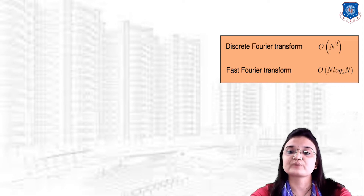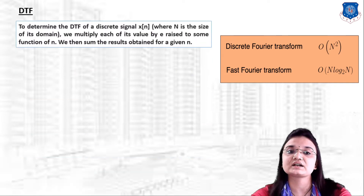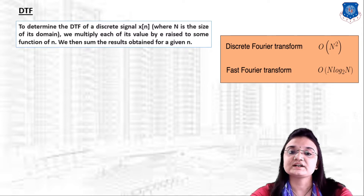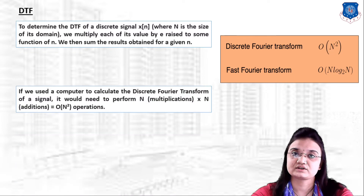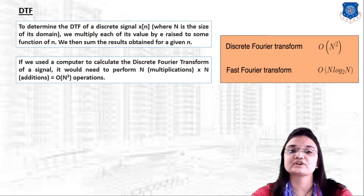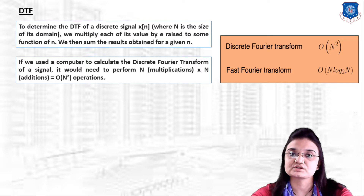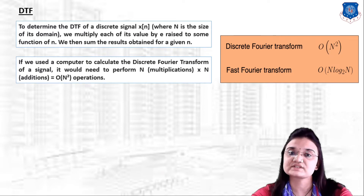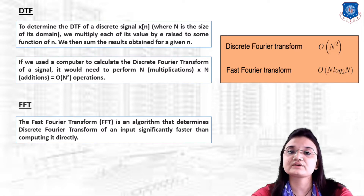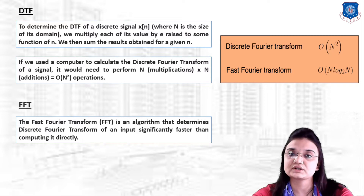In the DFT we have to perform N² operations, while in the Fast Fourier Transform we have to perform only N·log(N) operations. To compute the DFT of a discrete signal x(n) of size N, a computer would need N multiplications per output times N outputs, equaling N² operations. The FFT is an algorithm that determines the DFT significantly faster than computing it directly.